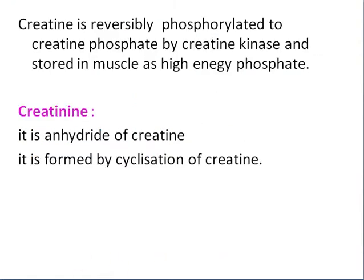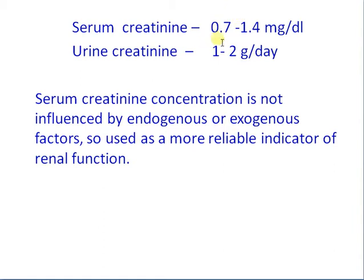Creatinine is reversibly phosphorylated to creatine phosphate by creatine kinase, and it is stored in muscle as a high-energy phosphate. Creatinine is the anhydride of creatine, formed by cyclization of creatine. The normal serum creatinine range is 0.7 to 1.4 mg/dL; urinary creatinine is 1 to 2 grams per day.